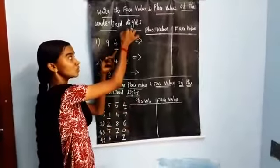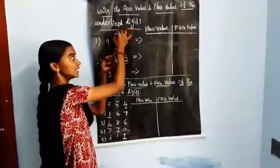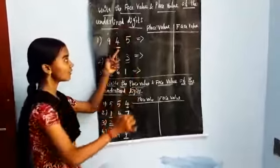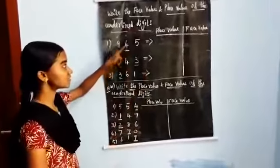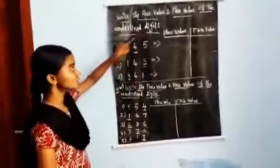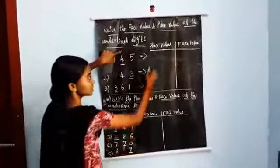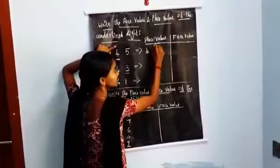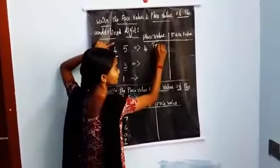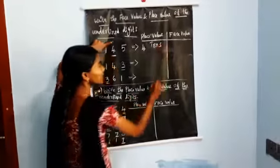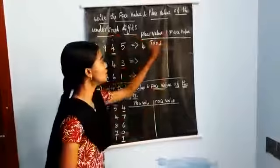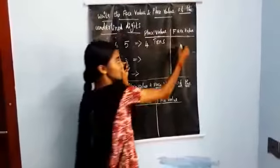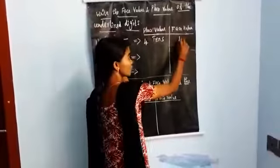The place values are 1s, 10s, 100s. The underlined digit is 4, and it is in the 10s place. So the place value is 4 tens, or 40. The face value of the underlined digit is its actual value, yes, 4.